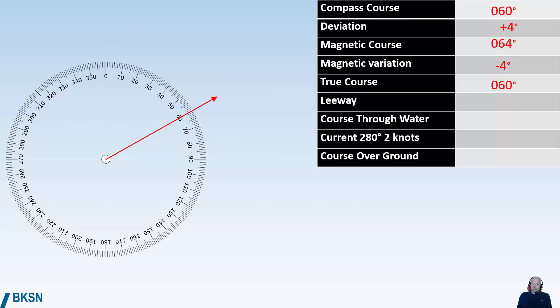We have an example here. You have a compass course 060, deviation plus 4 degrees, which gives you a magnetic course of 064. You had a magnetic variation minus 4, so you have a true course of 060. You have wind from the north-northwest, causing a few degrees, say 5 degrees of leeway, which means that you have a course through the water of 065.